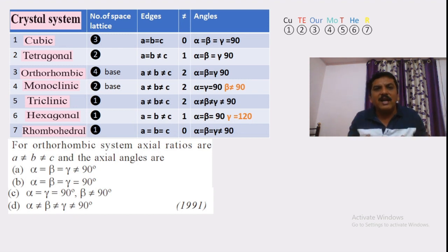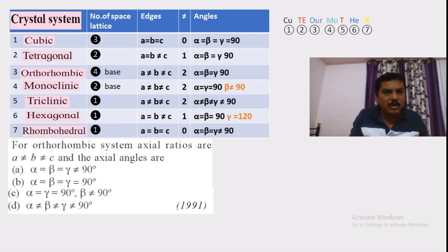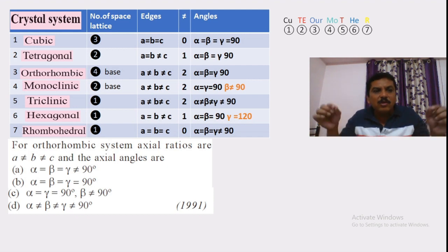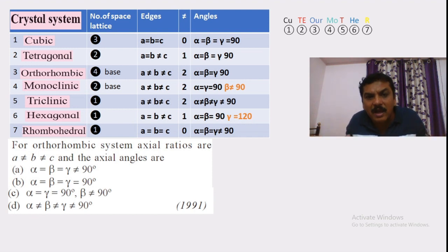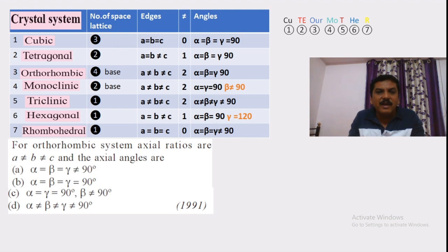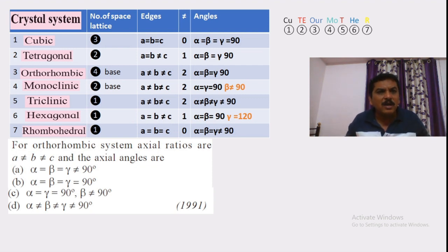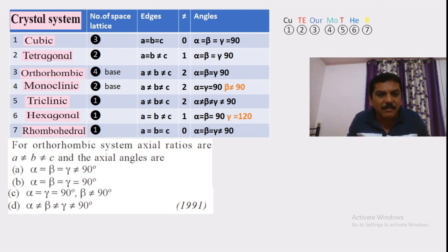Key differentiating points: in monoclinic only beta is different; in hexagonal only gamma is different (120°). Cubic and rhombohedral both have a = b = c and alpha = beta = gamma, but in rhombohedral these angles are not equal to 90°. If you remember these differentiating points you can solve MCQs. Remember all this for NEET and JEE examinations. Thank you.